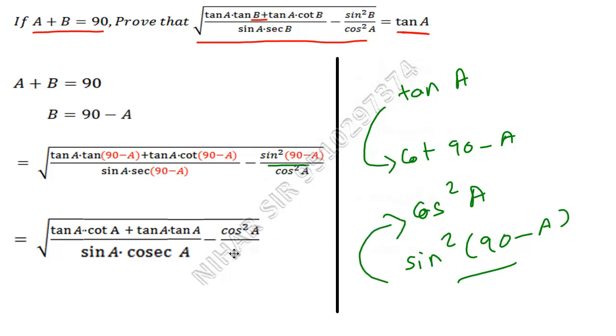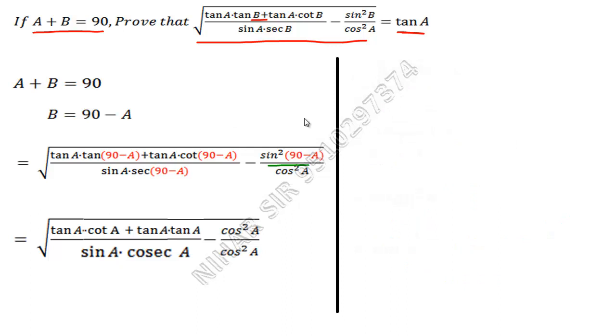So I have cos²A upon cos²A. Now let us further simplify this. So here tan A into cot A is 1, right? Because they are reciprocal of each other. Tan A and cot A, which is 1 upon tan A, are reciprocal of each other, so this is canceled.